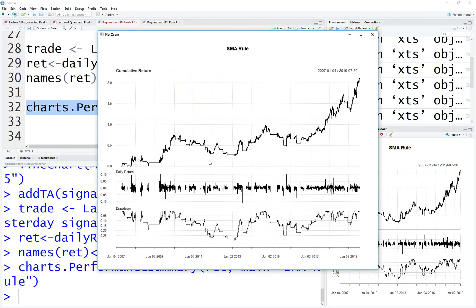And the daily return... okay. And the drawdown is not that bad—only 25%, which is much better than the filter rule.